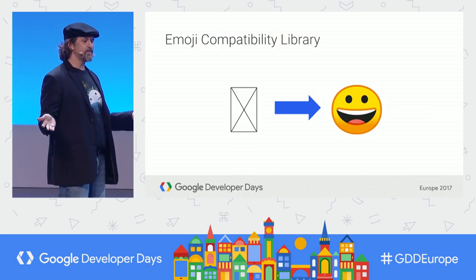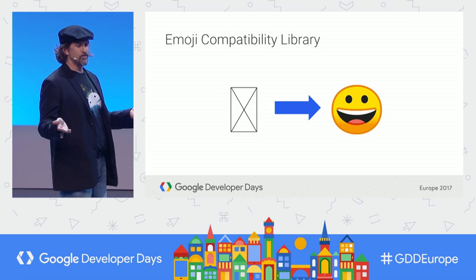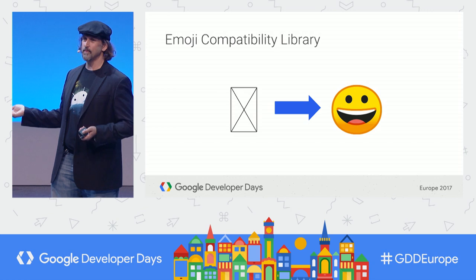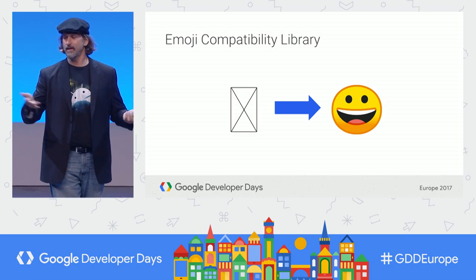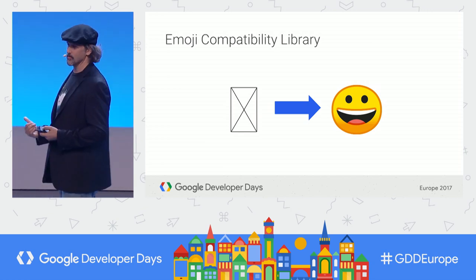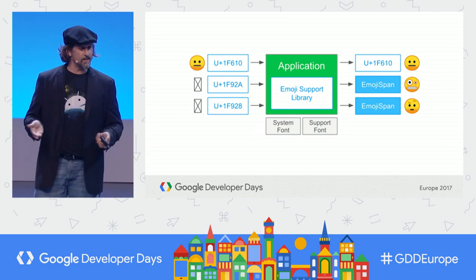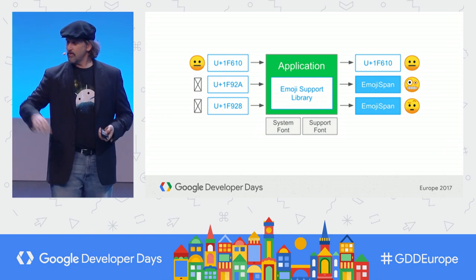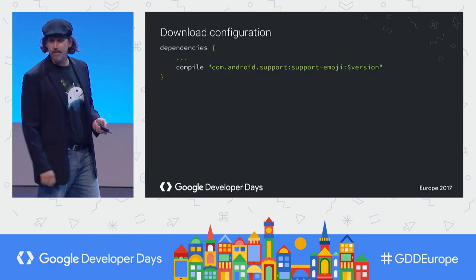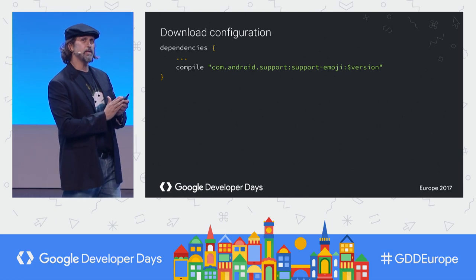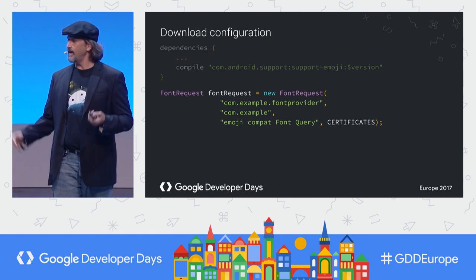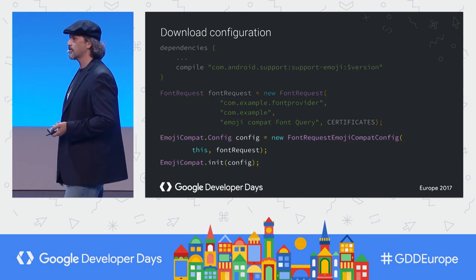There's nothing worse than when someone sends you a message and you get a box that provides no information — we call this tofu because it's a box. This is there because the system has always bundled the emoji font, and Unicode keeps adding new emoji. So the support library has access to a new font. It checks per glyph if it can be rendered, or replaces it with emoji spans if it can't. The download configuration integrates with downloadable fonts — you just add your dependencies, make your font request, and initialize it in your application onCreate.